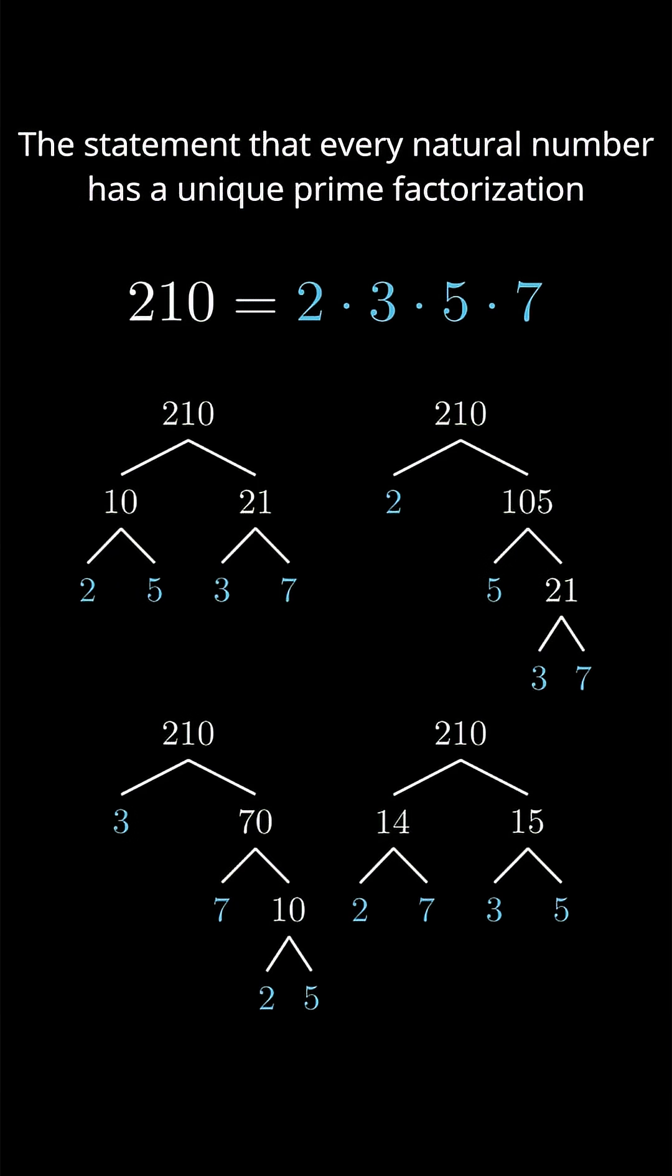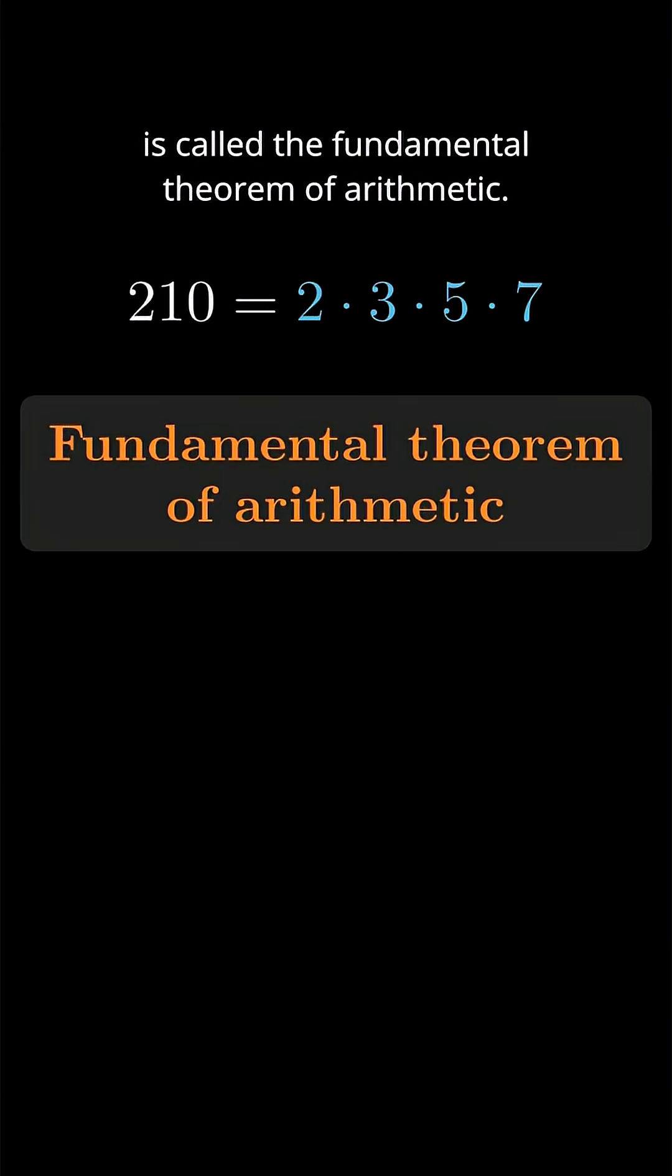The statement that every natural number has a unique prime factorization is called the Fundamental Theorem of Arithmetic, and the ancient Greeks had a proof that it's true.